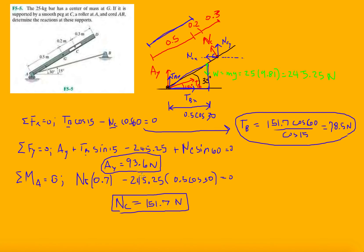And there we have it — assuming we did this right, those are the values you should have gotten. This is how you go through this problem. We've pretty much used the same method in all of them — different geometries but the same methodology. If you have questions, shoot me a message or comment down below and I'll be happy to respond. Thanks for your time, guys — take it easy.